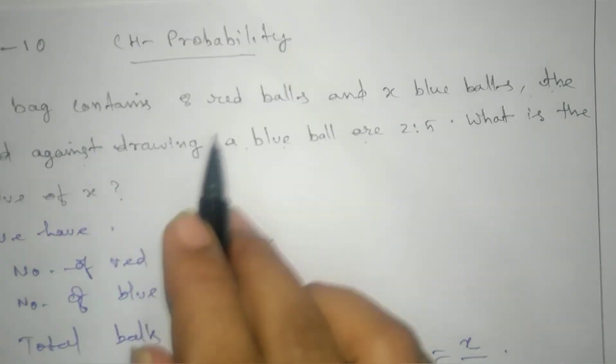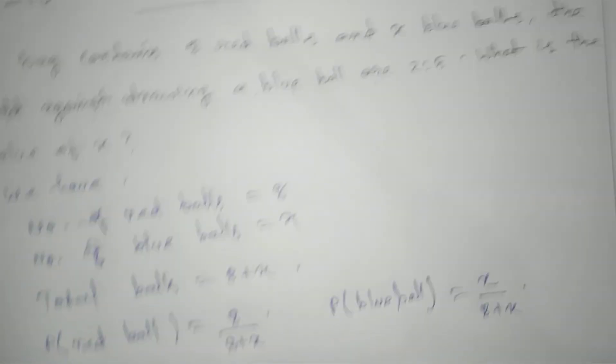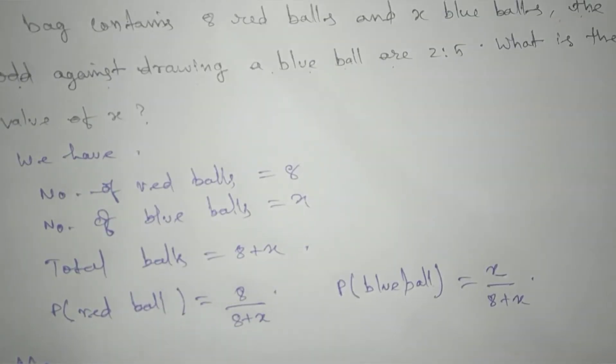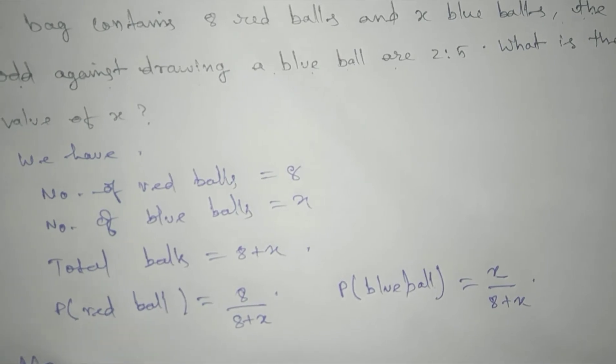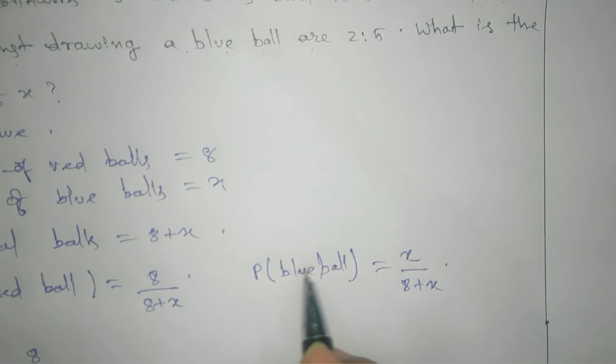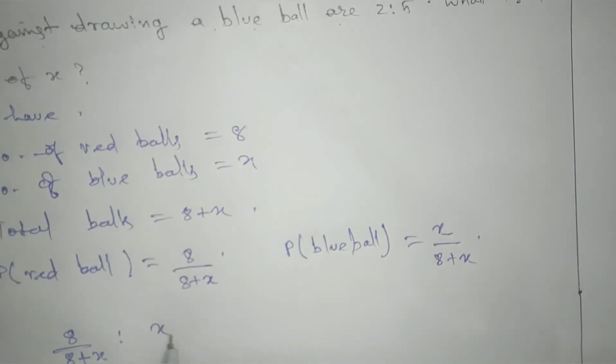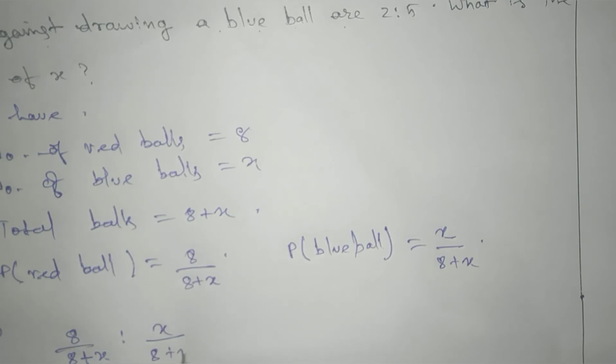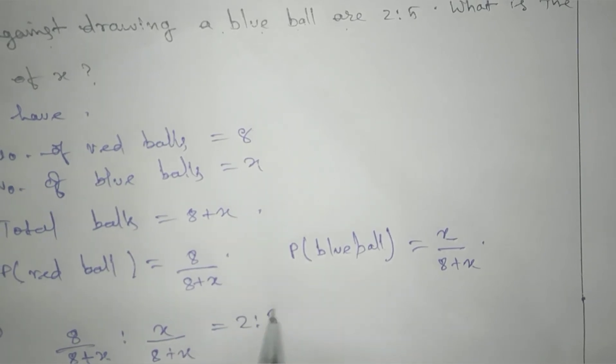So the odds against - the probability of red ball to probability of blue ball. So 8/(8+x) divided by x/(8+x) equals 2 to 5.